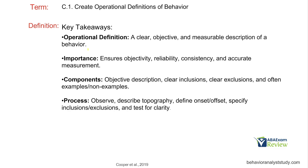Key takeaways: an operational definition should be clear, objective, concise, and measurable — fact-based definitions that are easy to observe, easy to measure, and agreed upon by anyone reading them. They ensure objectivity, reliability, consistency, and accurate measurement. What do they include? An objective description, inclusions, exclusions, and examples and non-examples. How do we create one? We observe, look at the topography, examine the onset and offset, think about inclusions and exclusions, and then we test.